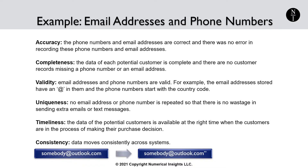Timeliness implies that the data of the potential customers is available at the right time when the customers are in the process of making their purchase decision. In this case, it would be futile to have year-old data because most of the customers would have already made their purchase. Consistency of data means that the data moves consistently across systems. For example, an email automation software would not add an additional quotation mark after each email address, which would prevent the email from reaching its intended destination.